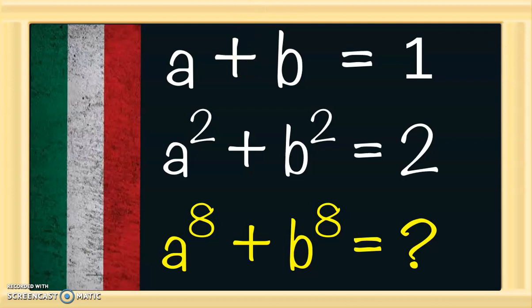Hello, it's SuperEasyMath. Today I've got this math Olympiad from Hungary. Given that a plus b equals 1 and a² plus b² equals 2, we need to find a⁸ plus b⁸. Please pause the video and give it a try. And now let's get started.